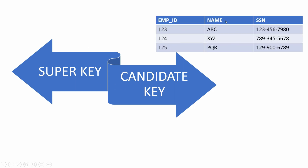Here we can identify each row uniquely using employee ID, and also using SSN. We can also identify every row uniquely by using employee ID and name together. For example, we will have a single record for 123 and ABC, a unique record for 124 and XYZ. But the column name is actually redundant because we could just use employee ID to identify each row uniquely.